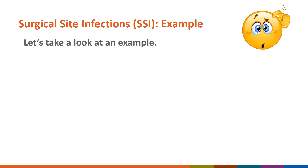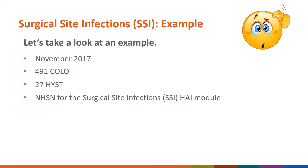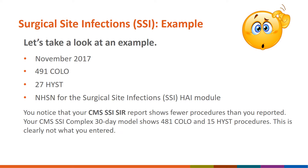Let's take a look at an example. It is November 2017, and so far your facility has reported 491 colo and 27 hist procedures during the calendar year in NHSN for the Surgical Site Infections CMS-SSI-HAI module. You have been tasked to verify that all of your 2017 SSI data have been entered correctly. You notice that your CMS-SSI-SIR report shows fewer procedures: 481 colo and 15 hist. This is clearly not what you entered.